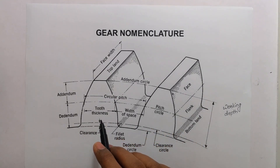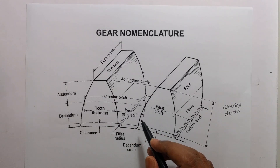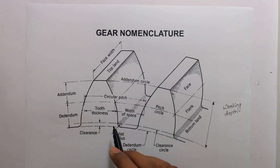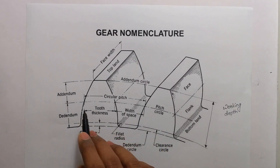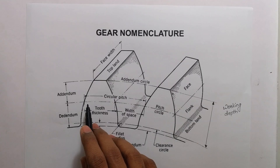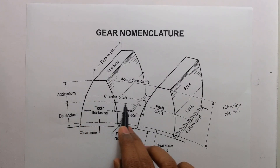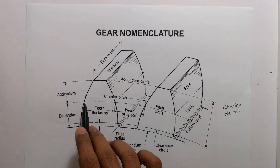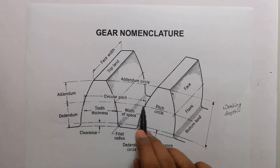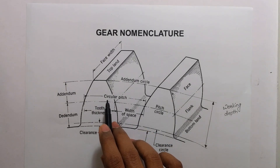Circular pitch is the distance measured on the circumference of the pitch circle from a point of one tooth to the corresponding point of the next tooth. This distance is called the circular pitch.